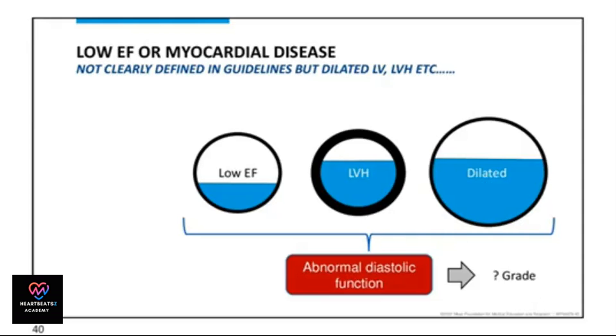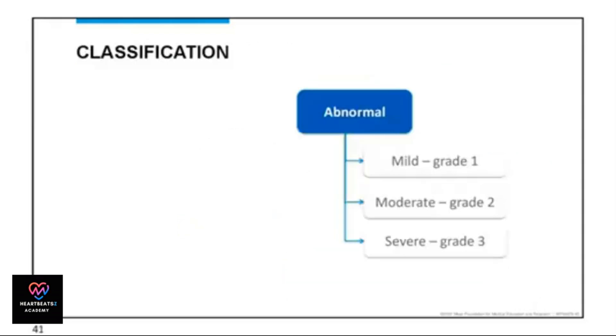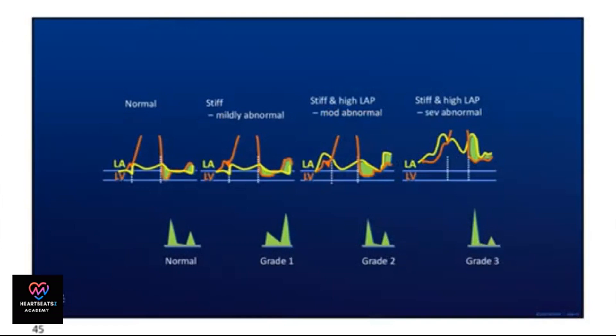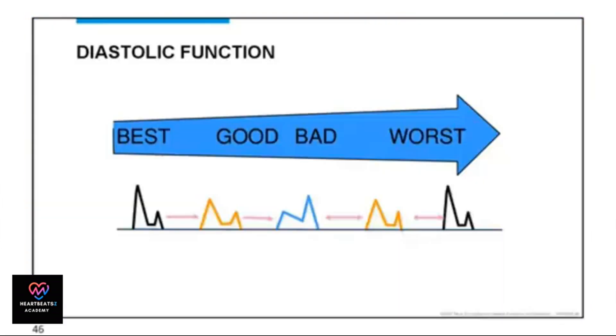Low EF or dilated myocardial disease can indicate abnormal diastolic function. Diastolic function ranges from normal to grade 3, as illustrated here.